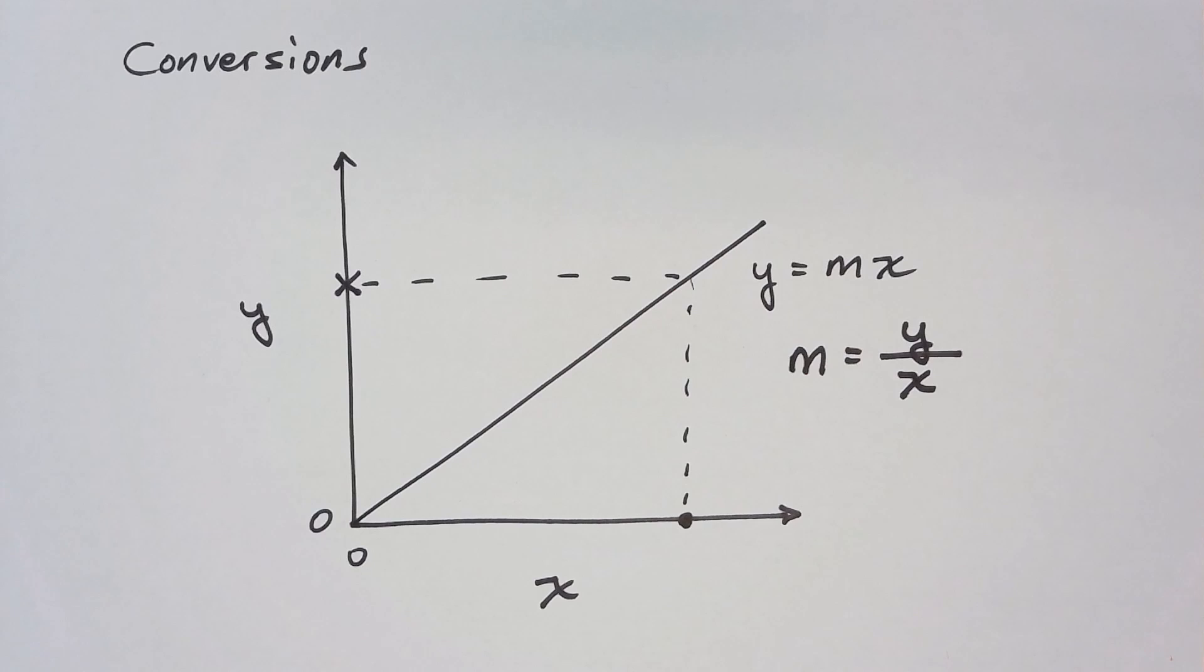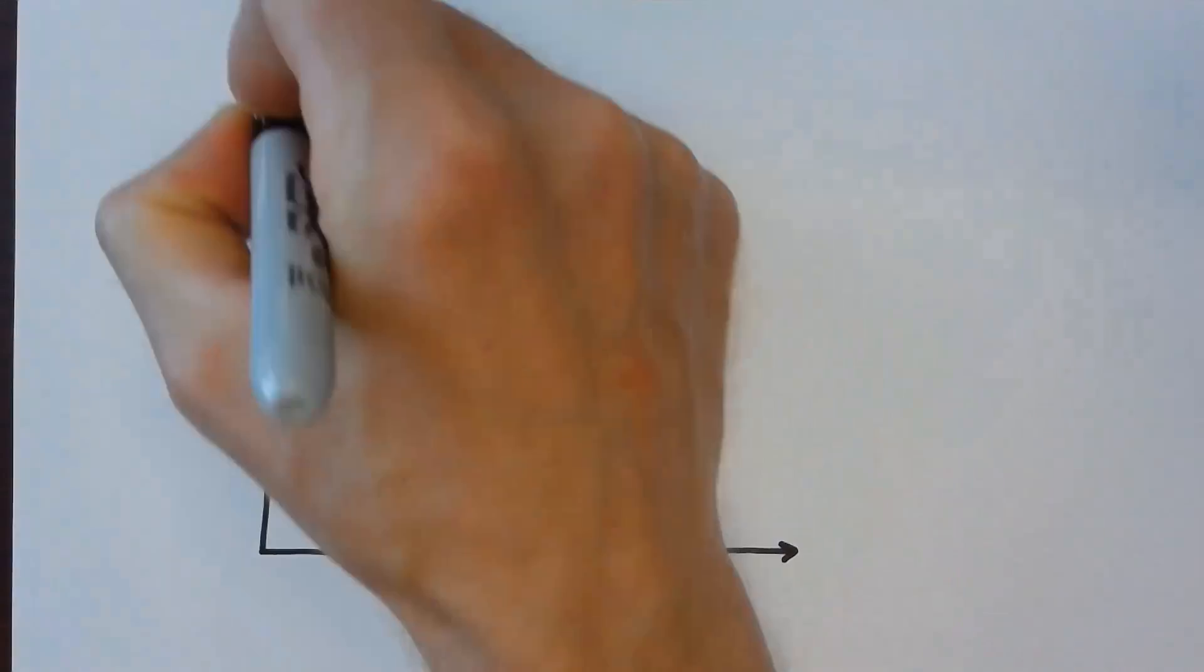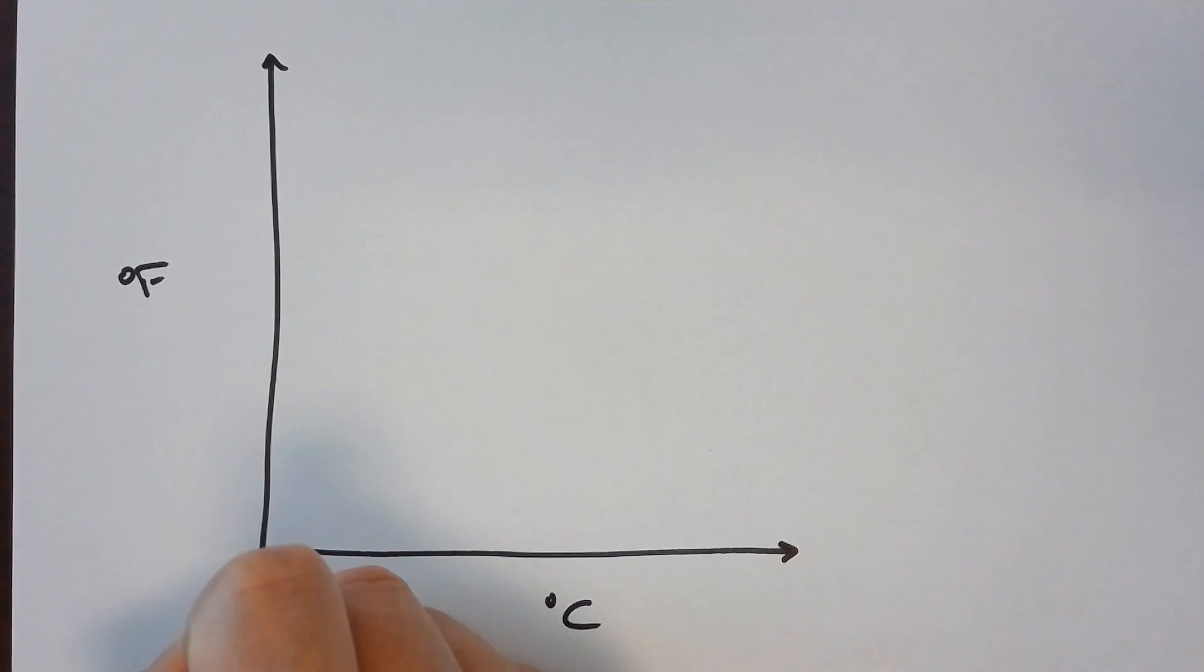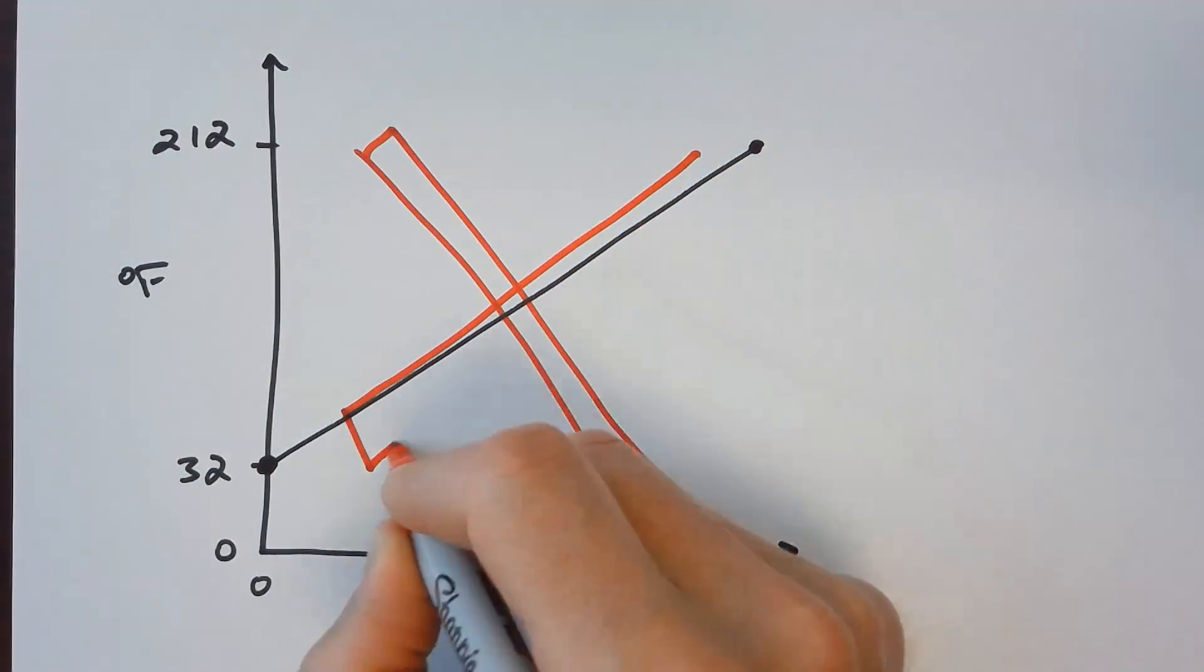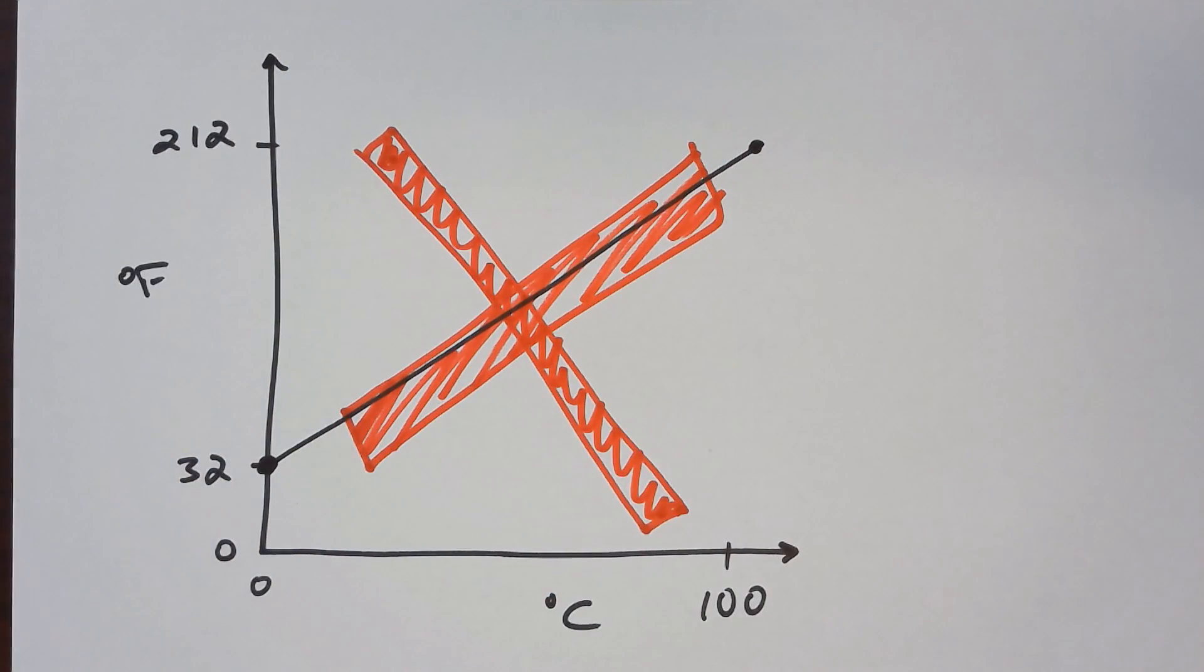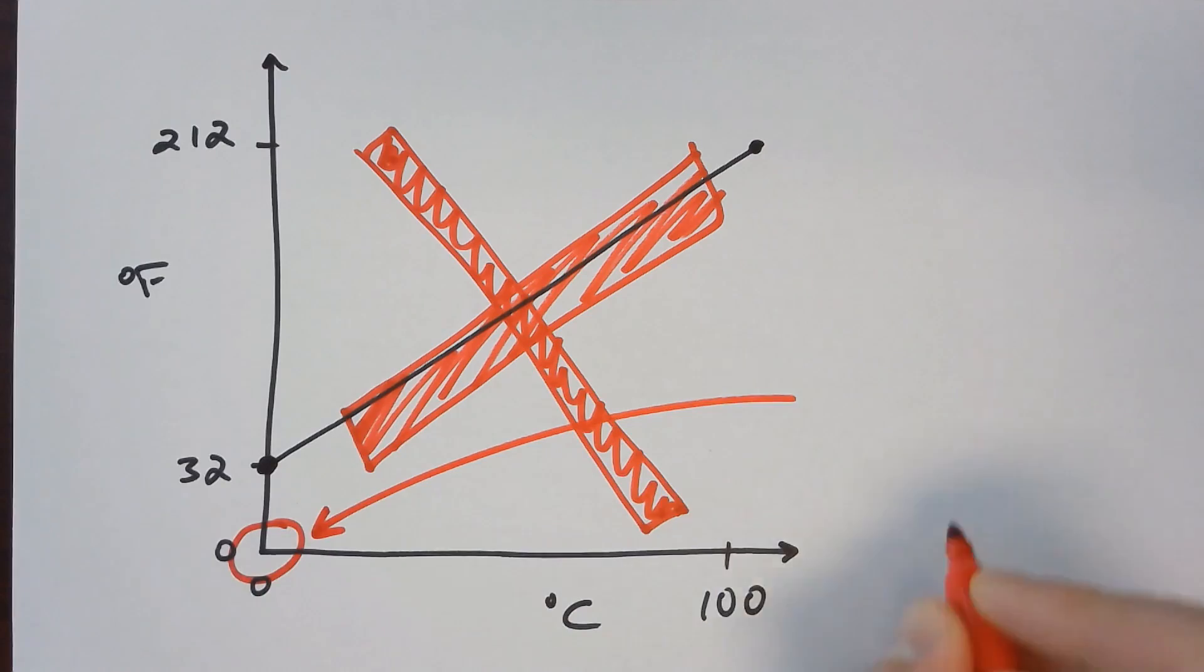For example, the Fahrenheit and Celsius temperature scales have different zero points. The relationship between degrees Fahrenheit and degrees Celsius can be obtained by remembering the freezing and boiling points of water. A straight line connecting these points shows the conversion between these temperature scales.